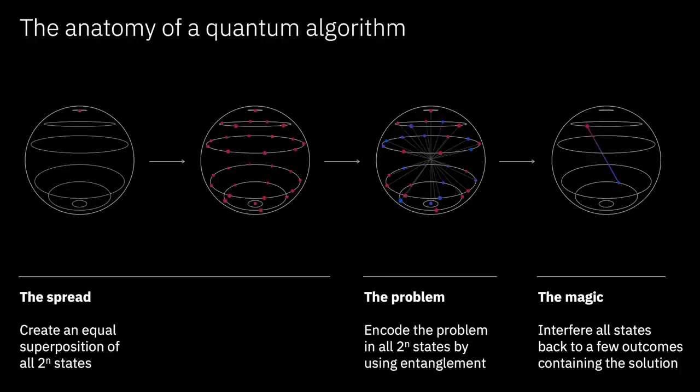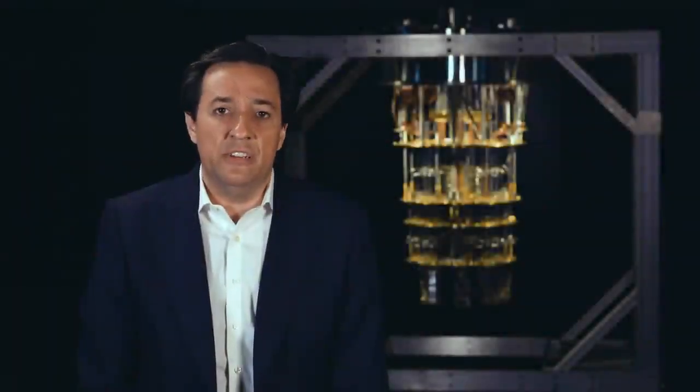The way that happens is that that encoding gets done through entanglement. So notice that what we've done now is that some of those states are now changed in phase. You're seeing those depicted as blue and some are pink. Now in our machines, not only we have this superposition, we have exploited the property of entanglement to do the encoding of information. And the principle of interference comes from the fact that we can now take these states and combine them and interfere them with one another in such a way that we get to cancel things out and maximize the right answer. So many things fall away and the right answer gets maximized. We perform a measurement and we get our result.